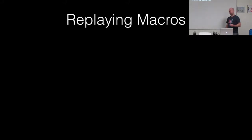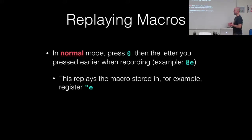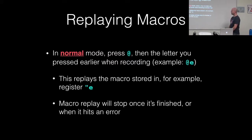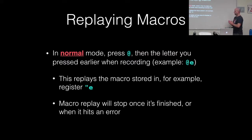Once you've recorded these macros, you will want to replay them. In normal mode, you press @ and then the character of the macro you recorded. So if we recorded the macro into register E, we would play it back by pressing @E. The macro will continue to play until it hits the end, or until it hits an error condition. So if we only had three lines in the file, the macro might have errored out because there weren't five lines to change. Once it hits that error, it will just stop, but everything that changed up until that point will stay in effect — and that's actually something you want to have happen.